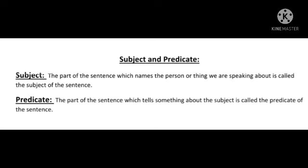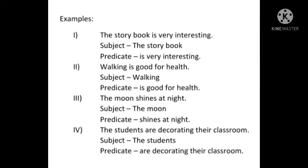Now let's study subject and predicate. The part of the sentence which names the person or thing we are speaking about is called the subject. The part which tells something about the subject is called the predicate. For example: 'The storybook is very interesting.' The subject is 'the storybook' and the predicate is 'is very interesting.' 'Walking is good for health' — the subject is 'walking' and the predicate is 'good for health.'